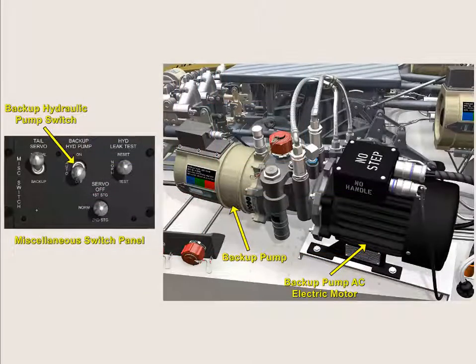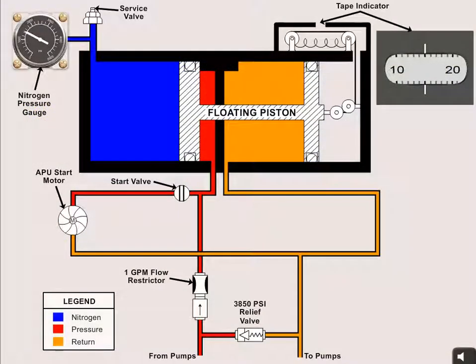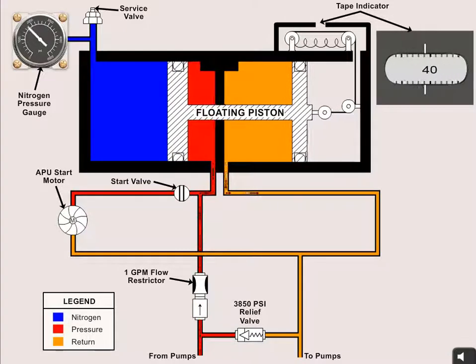The electrically driven backup pump on the left forward deck within the main rotor pylon automatically recharges the depleted hydraulic accumulator for the next APU start. The backup hydraulic pump switch on the miscellaneous switch panel controls backup hydraulic pump operation. The electrical power generated by the APU generator can operate the backup hydraulic pump to recharge the APU accumulator.